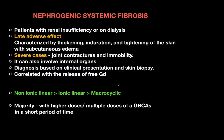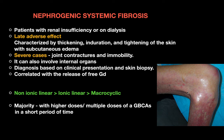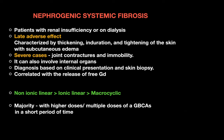One of the most important adverse reactions is Nephrogenic Systemic Fibrosis (NSF), characterized by thickening, induration, and tightening of the skin with subcutaneous edema. It occurs in patients with renal insufficiency or those on dialysis. Severe cases can lead to joint contractures and immobility and may involve internal organs. Diagnosis is based on clinical presentation and skin biopsy, correlated with the release of free gadolinium from tissue. It is most commonly associated with non-ionic linear contrast agents, then ionic linear, and least with macrocyclic types. The majority of cases involve higher or multiple doses in a short period.